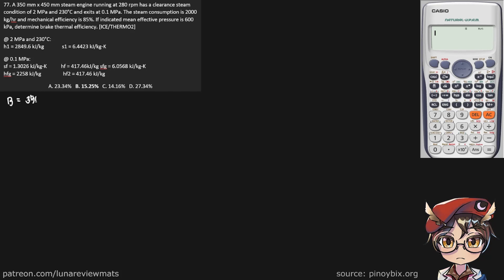Bore is 350 millimeters and the stroke we have 450. Okay, steam engine running at 280 RPM. That's our revolutions per minute, designated as capital N.